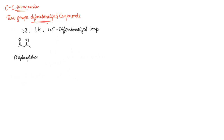A 1,3 difunctionalized compound such as beta-hydroxy ketone is usually obtained through aldol condensation, in which two acetaldehyde molecules combine together to give an intermediate. This intermediate is relatively unstable and is not separated from the reaction; instead, it is dehydrated to give an alpha-beta unsaturated ketone.